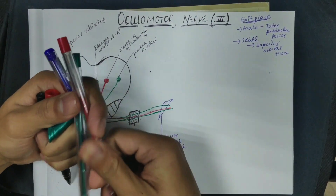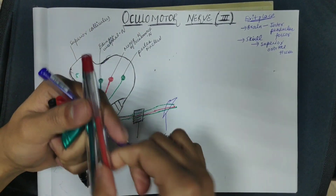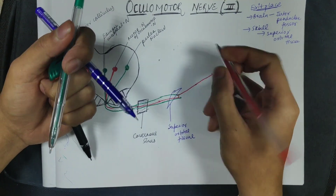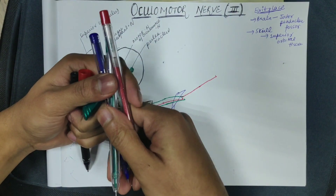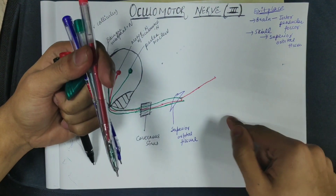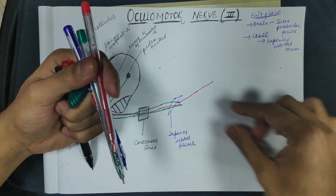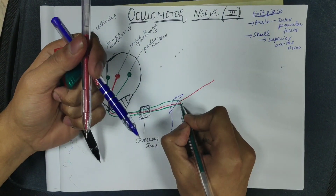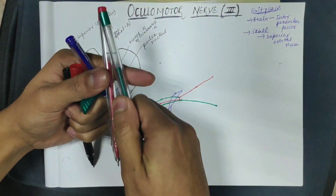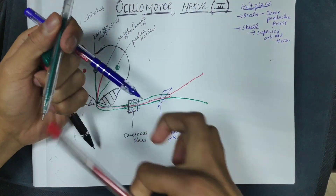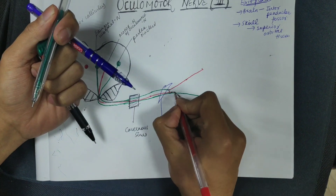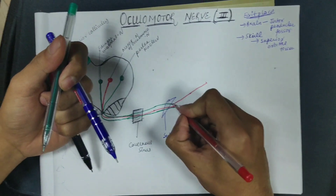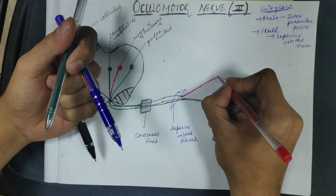After exiting through the superior orbital fissure, the fibers give two branches. The first branch is the superior branch, which is purely motor. The inferior branch contains both motor and parasympathetic fibers.